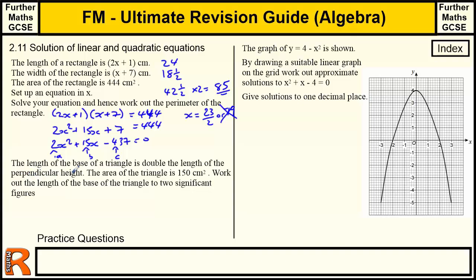Another type of question. Length of the base of the triangle is double the length of the perpendicular height. So this is all about triangles, base of the triangle and the height. So if the base is double the height, we call the height x. The base would be 2x.